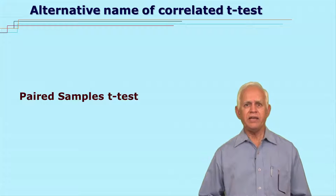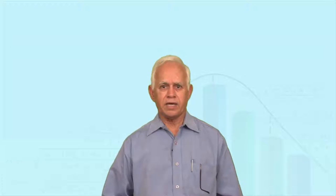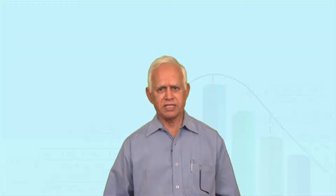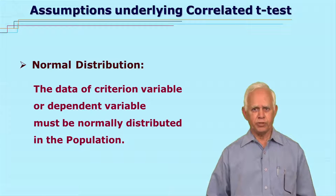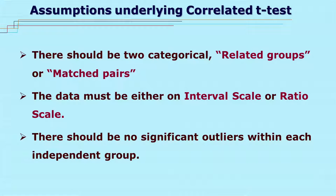This name you will find in SPSS. The data should satisfy some assumptions. One assumption is normal distribution — the data should have a normal distribution. The data should be classified into two groups. Another assumption is that the data must be either on the interval scale or on the ratio scale. The last assumption is that there should be no outliers, meaning no extreme values. If there are extreme values, the correlated t-test will not be appropriate for the analysis.